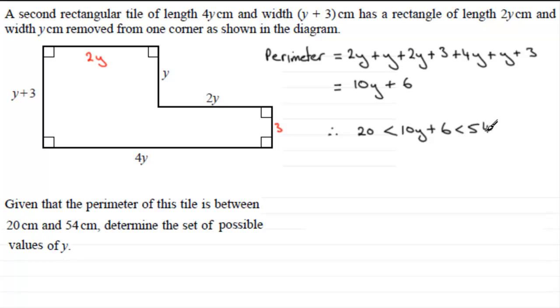Now to solve this kind of inequality, what I can do is subtract 6 from each one of these three values. If I subtract 6, we've got 20 take away 6 which is 14, less than 10y, and 54 take away 6 gives us 48.